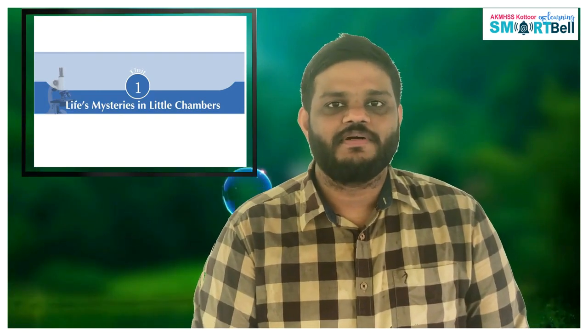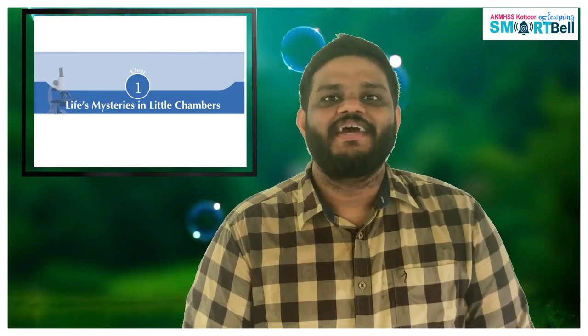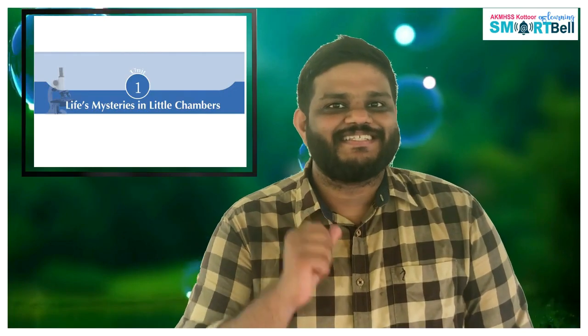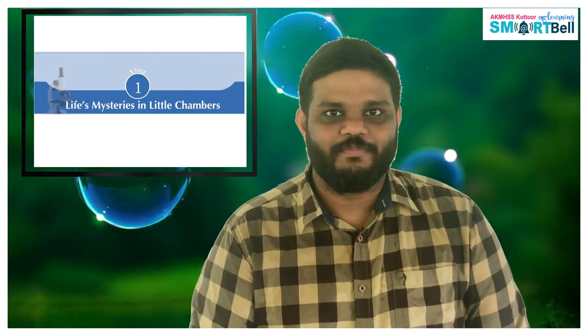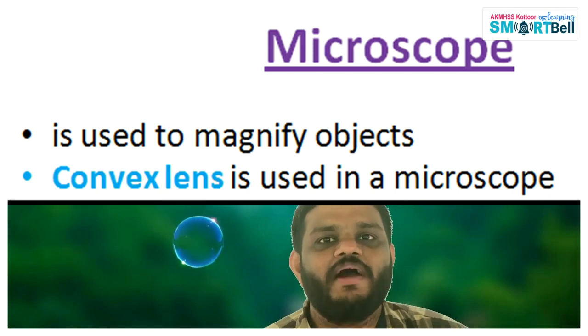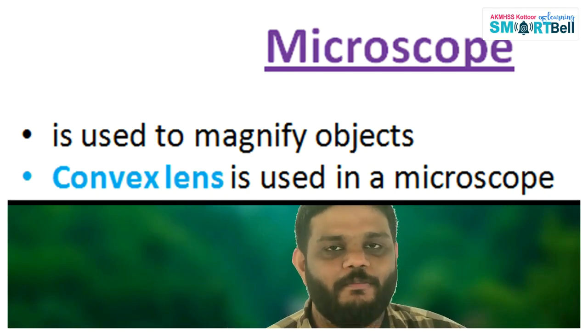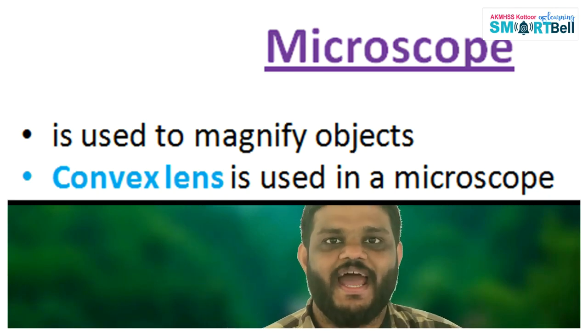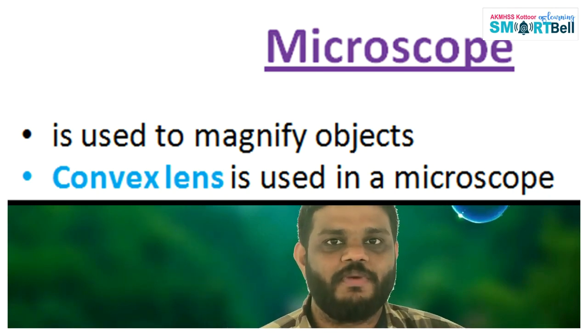What is this little chamber? After studying this chapter, you can understand what this little chamber is. You all are familiar with a microscope, right? Why do we use a microscope? A microscope is used to magnify objects, and this microscope uses a convex lens.